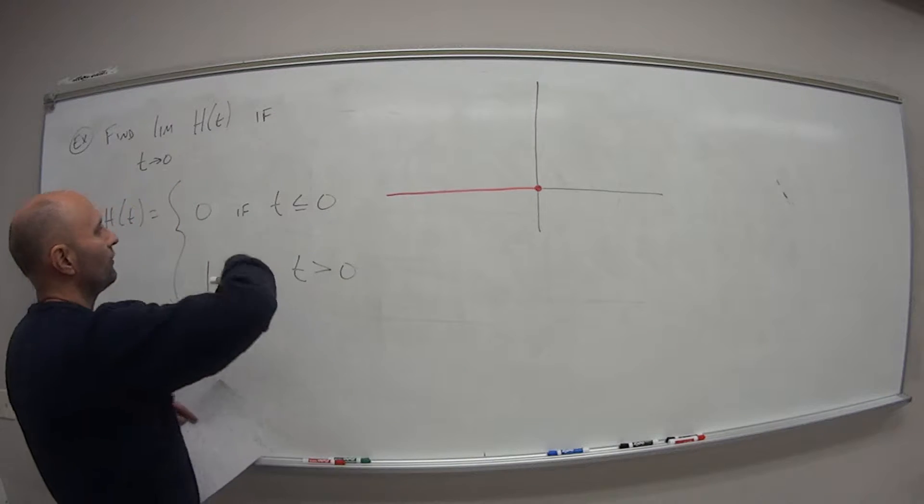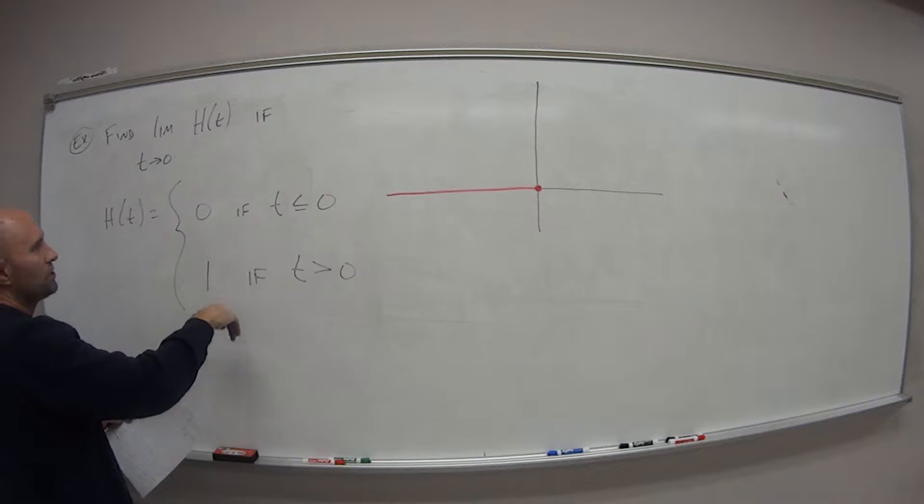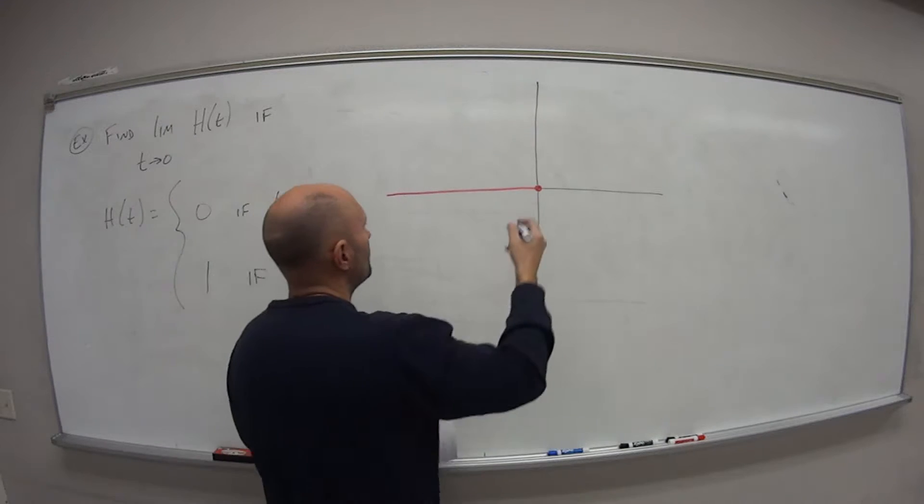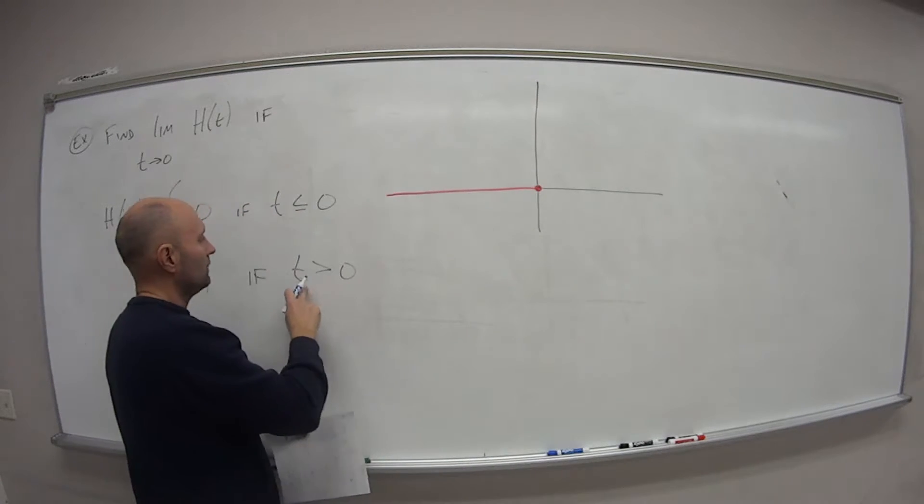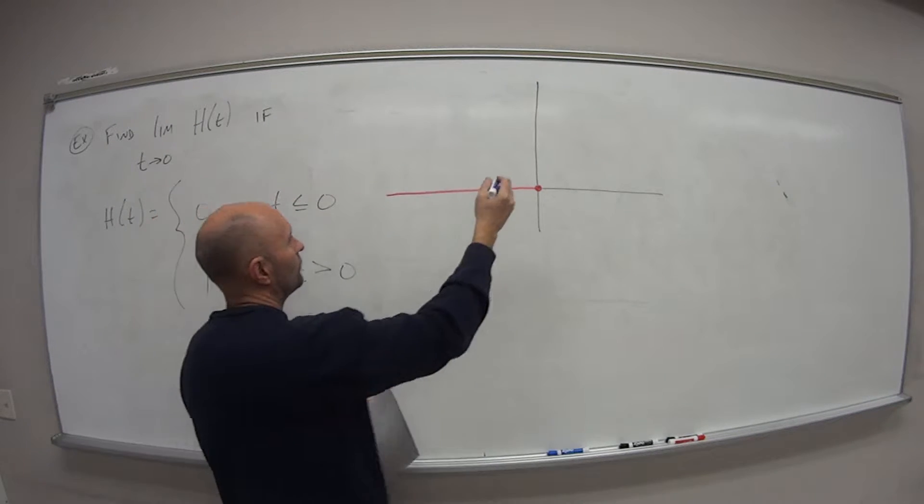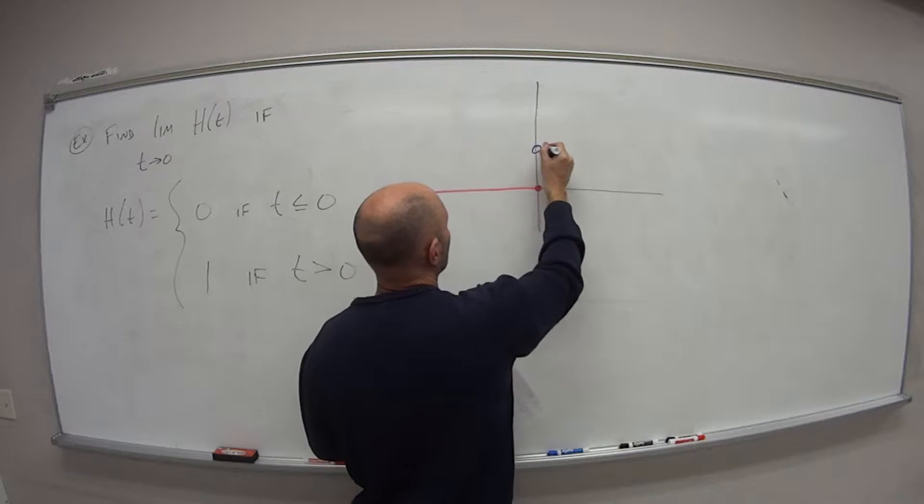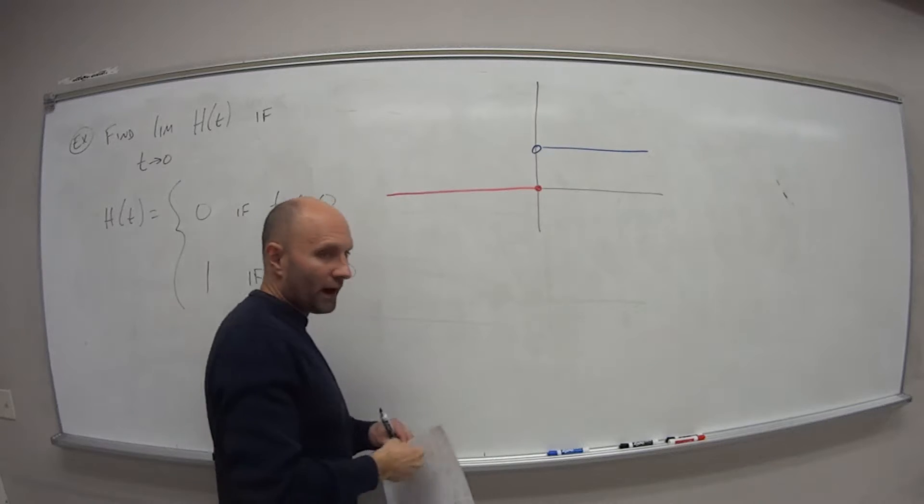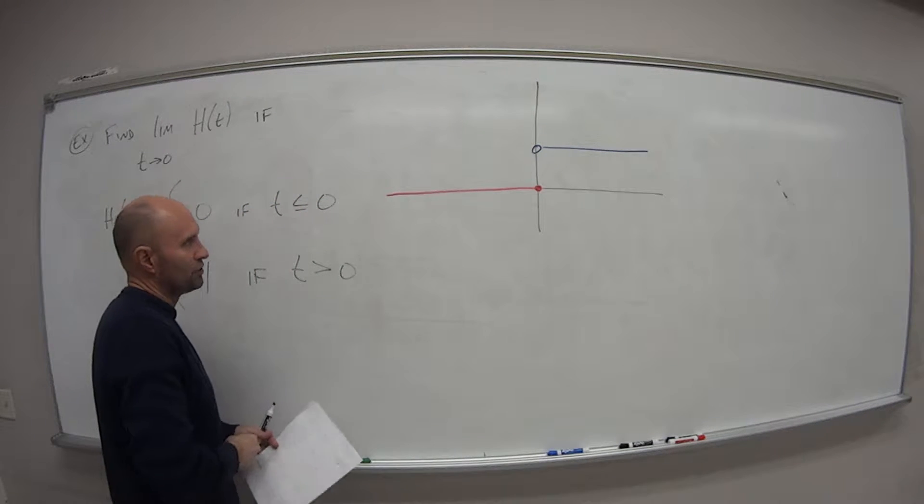But then as soon as I, let's say, turn on that light switch, it jumps up to a value of 1. But it's not included. t is strictly greater than 0. So that gets the open circle headed up to positive infinity as long as I leave the light switch on.